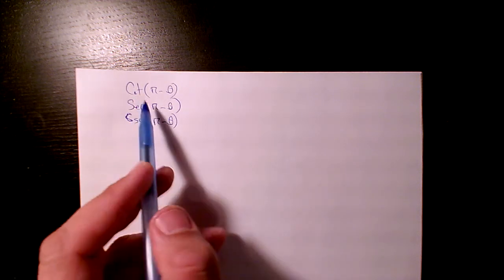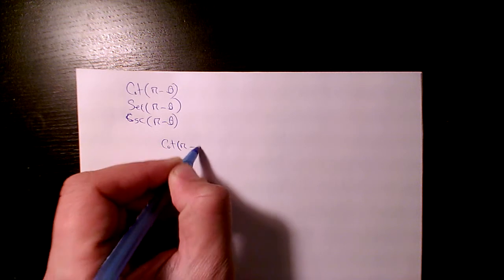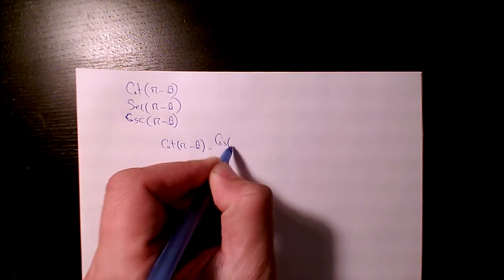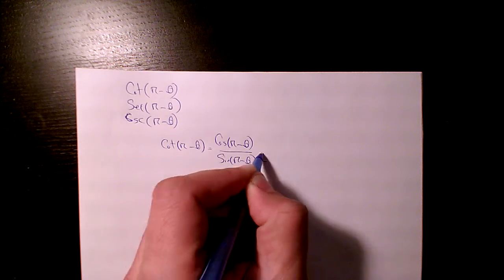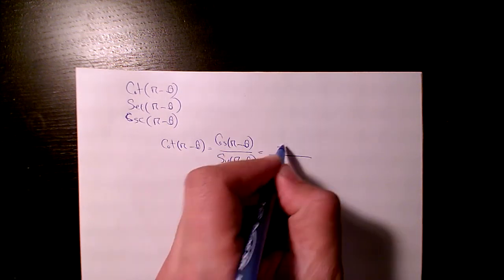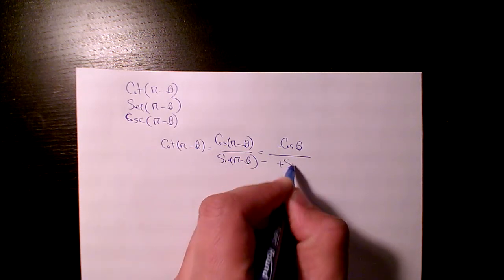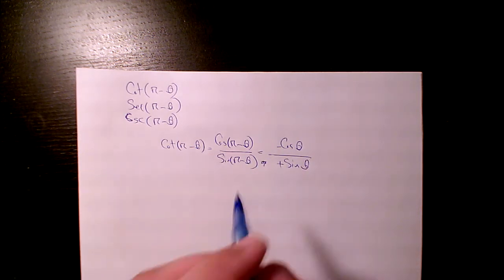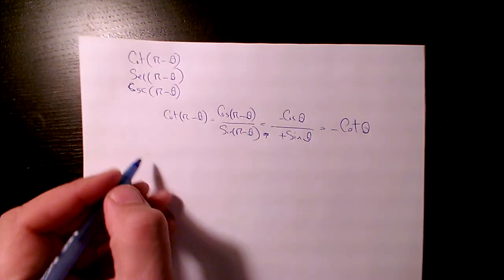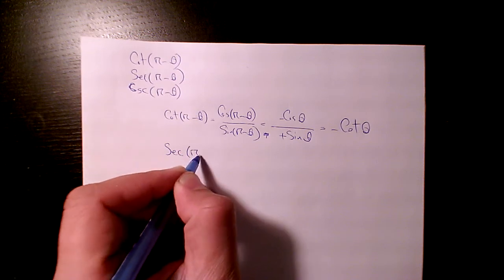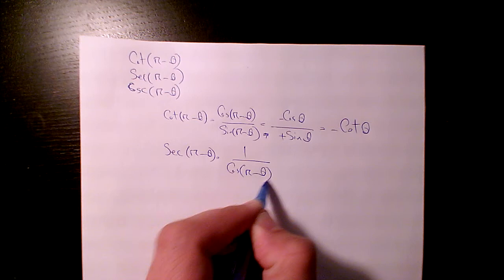So cot(π - θ) will be equal to cos(π - θ) divided by sin(π - θ). cos(π - θ) is equal to negative cos θ, and sin(π - θ) is equal to positive sin θ, so it's going to be equal to negative cot θ.